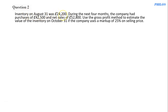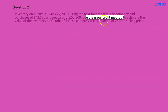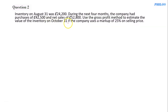Question two says: inventory on August 31st was 24,200. During the next four months the company had purchases of 42,500 and net sales of 52,800. Use the gross profit method to estimate the value of inventory on October 31st if the company uses a markup of 25 percent on selling price.